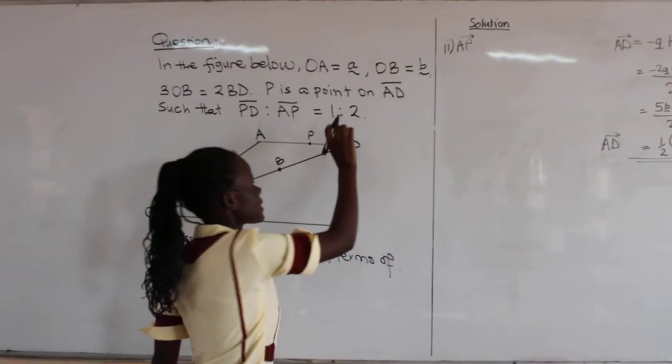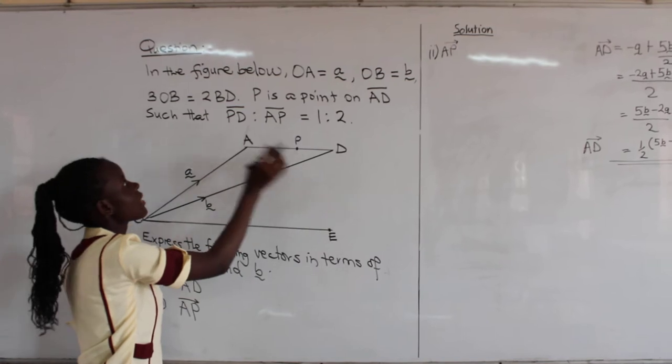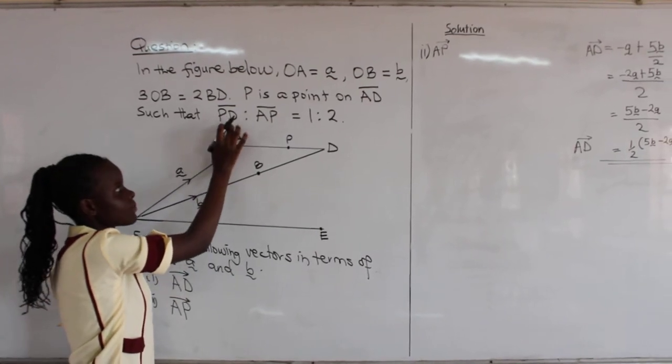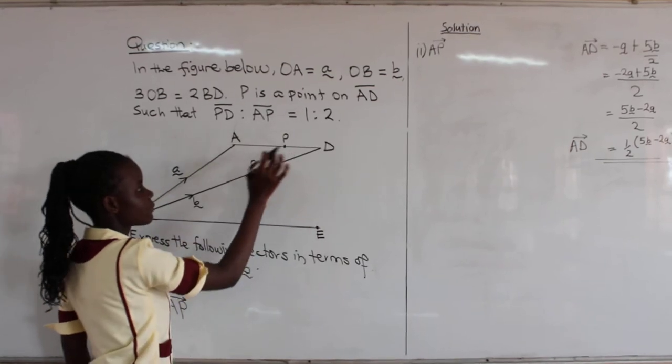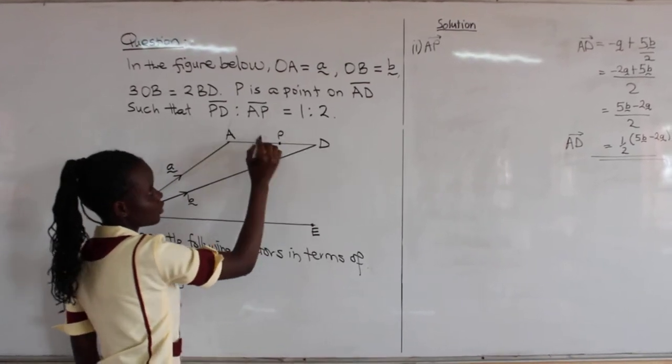But remember the question says P is a point on AD such that PD to AP is equal to 1 to 2. They said PD to AP is 1 to 2.